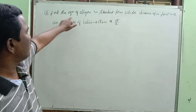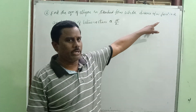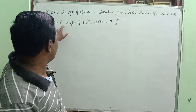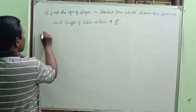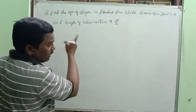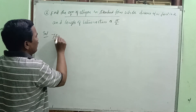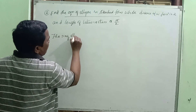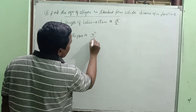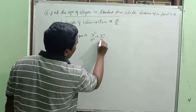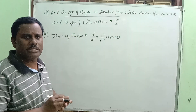Second question: Find the equation of the ellipse in standard form given that the distance between the foci is 2 and the length of the latus rectum is 15/2. The required ellipse is x²/a² + y²/b² = 1, where a > b. We need to find a² and b².